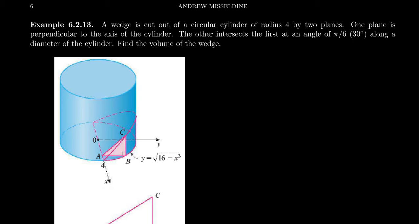So let's describe the solid in question and then try to find the volume of said solid. Imagine a wedge is cut out of a circular cylinder of radius 4 by 2 planes, and then there's an illustration of what's going on here down below, which is courtesy of James Stewart's calculus textbook.